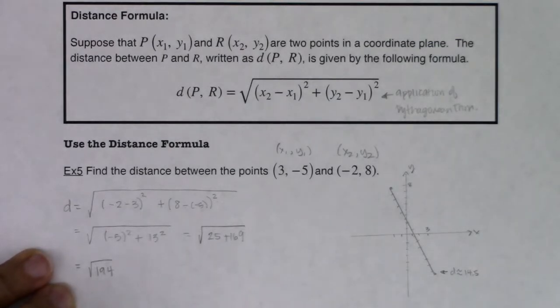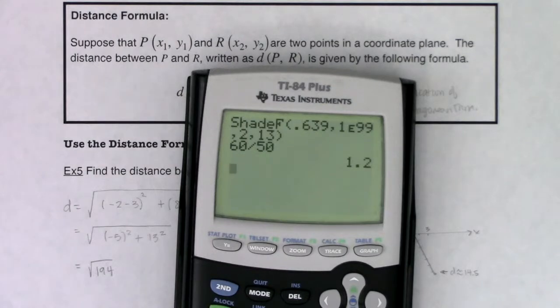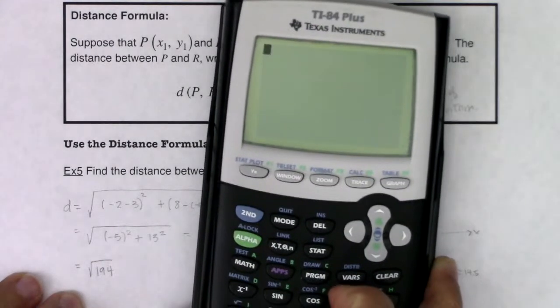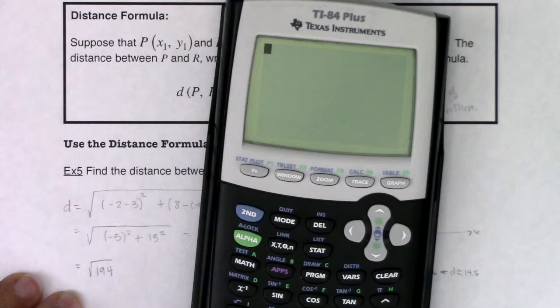So let's just check in on our graphing calculators. Oops, let me get that cleared out. That was from the last time I used the calculator here. So I have to do the square root of 16, not 16, the square root of 194.